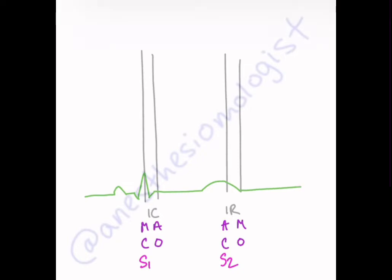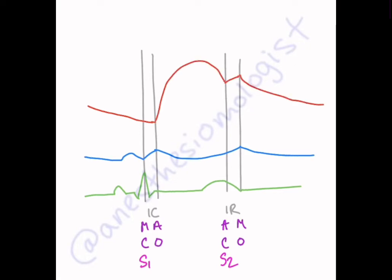We have our CVP tracing where the A-wave comes after the P-wave from the EKG, and the C-wave, which is the tricuspid bulge, happens after the mitral equivalent to the tricuspid closes. On our arterial line, we know that the dicrotic notch happens where the aortic valve closes.